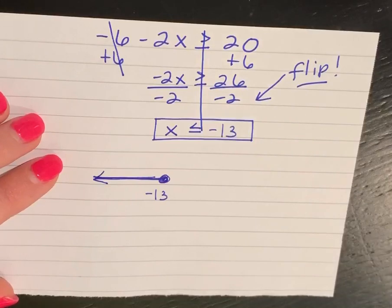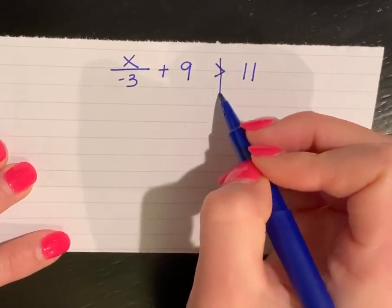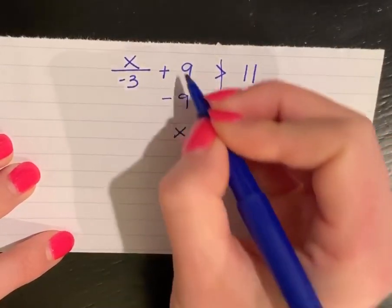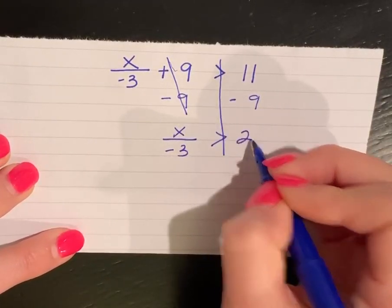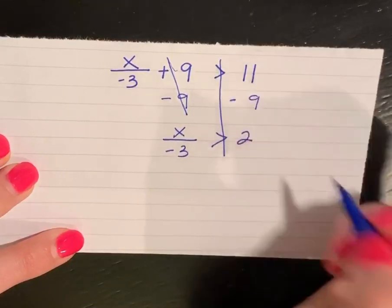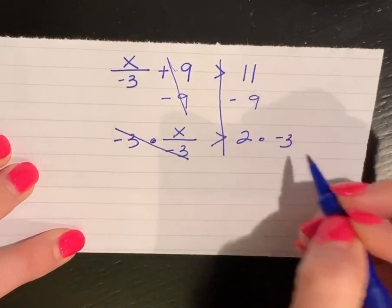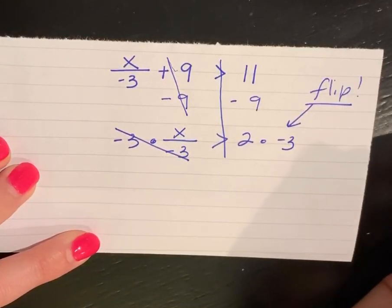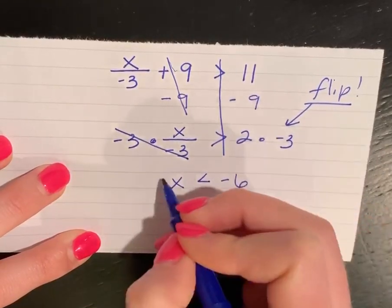Now let's do one where we look at what happens when we're multiplying by a negative. I'm going to solve it just like I would — subtract 9 from both sides — so I have x divided by negative 3 is greater than 2, because 11 minus 9 is 2. Then I'm going to multiply both sides by a negative, so I flip my inequality. My answer is x is less than negative 6.